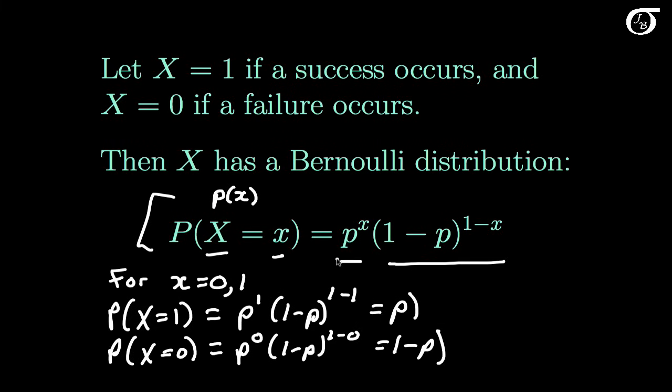So what we have up here is just a way of writing that in one line. Now it can be shown without too much difficulty that the mean of a Bernoulli random variable is equal to p, and the variance of a Bernoulli random variable is equal to p times 1-p.